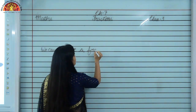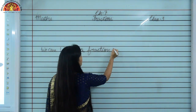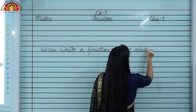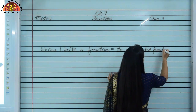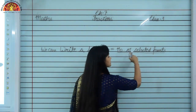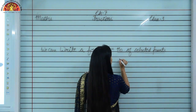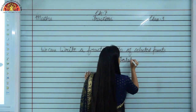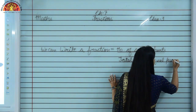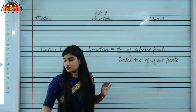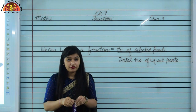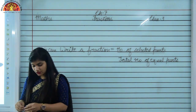We can write a fraction as: number of selected parts divided by, or you can say upon, the total number of equal parts. Now I am going to show how we can represent a fraction, how we can read a fraction, and how we can write a fraction.